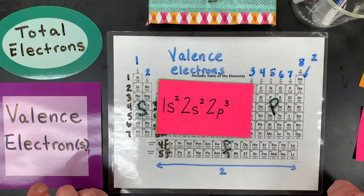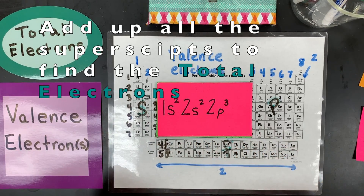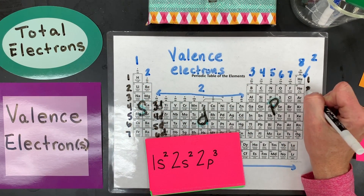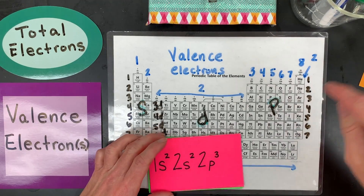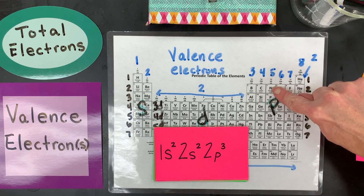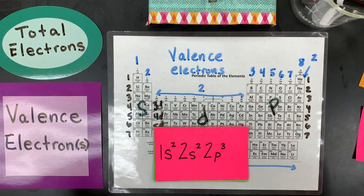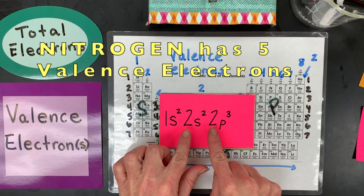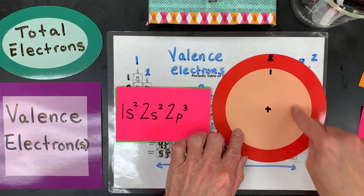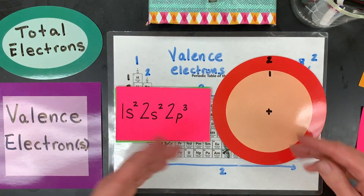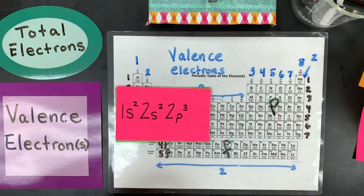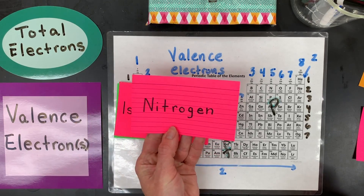What about 1s2, 2s2, 2p3? You can count up the superscript numbers — 2 + 2 + 3 = 7 total electrons. Or you can see it ends with 2p3. So this is nitrogen — not phosphorus, my mistake. It has 5 valence electrons. Why? Because those 2s2 and 2p3 electrons are all in the second energy level, the outermost level. The 2 and the 3 add up to 5, and that's why nitrogen has 5 valence electrons.